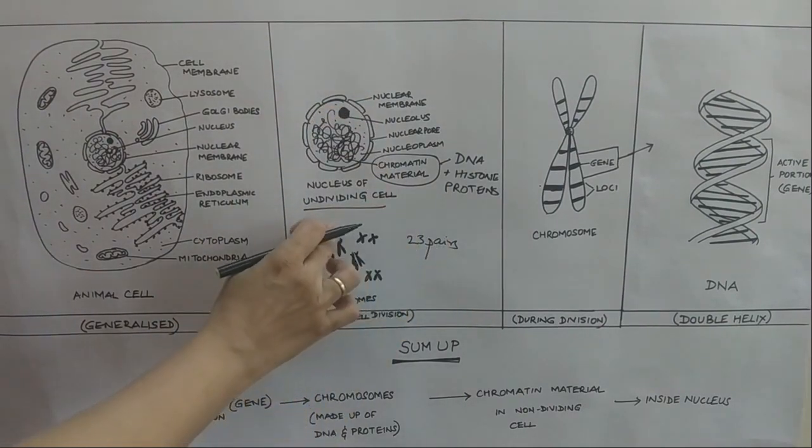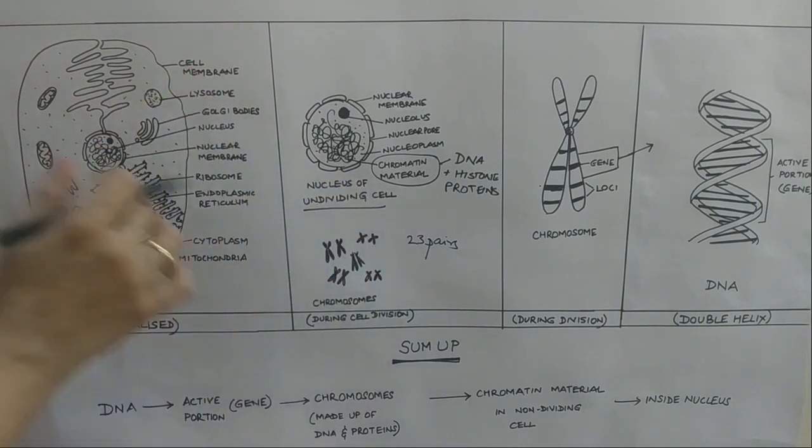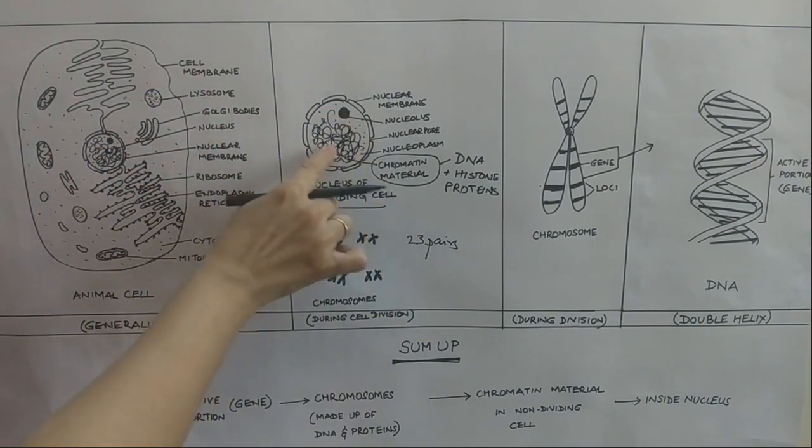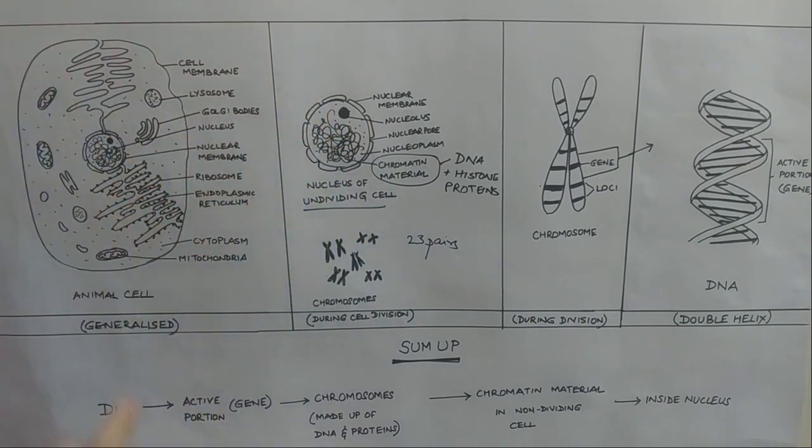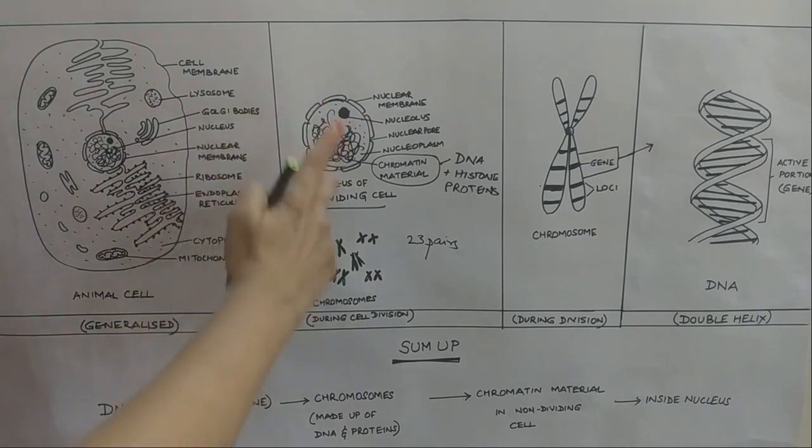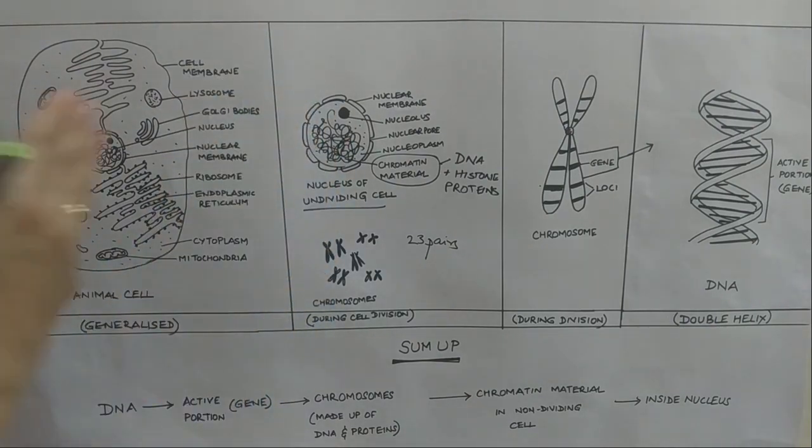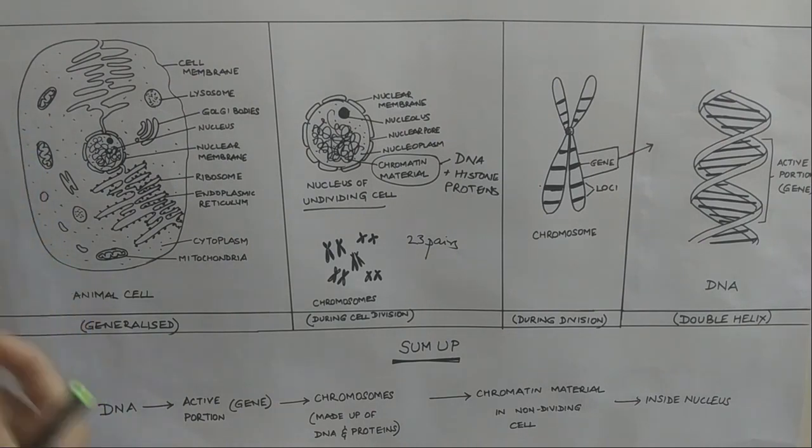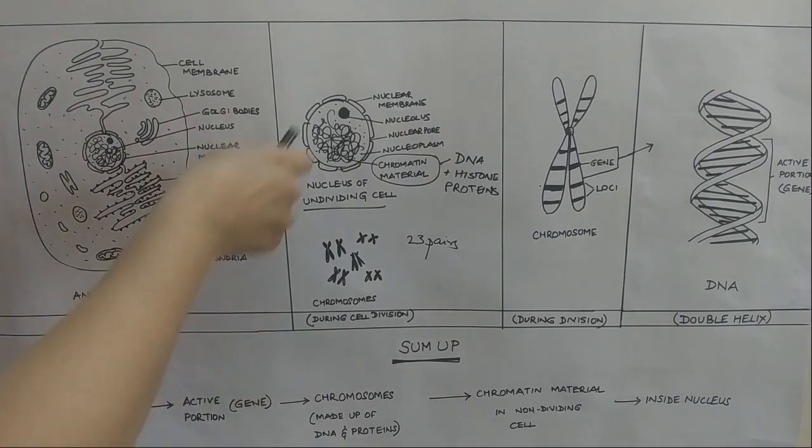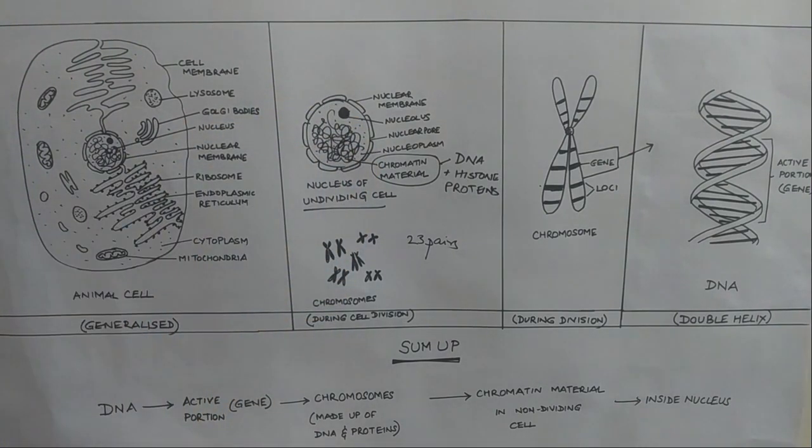But what happens during cell division? If this mass of entangled thread has to be divided into two equal parts, that is going to be very difficult. In fact, if you have to cut it, if the cell has to get divided, it will not divide equally. Whereas we know that in an offspring, the offspring gets half of the chromosomes from the father and half from the mother. How are you going to divide this entangled mass equally?